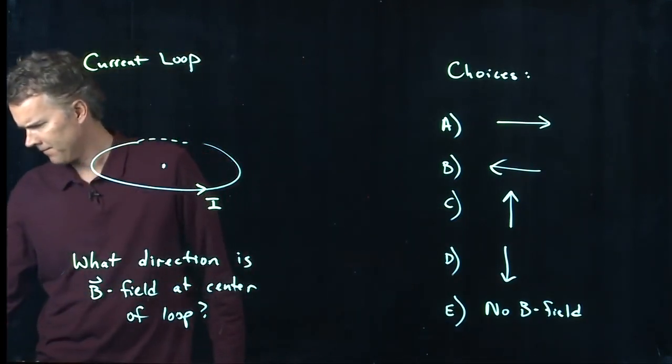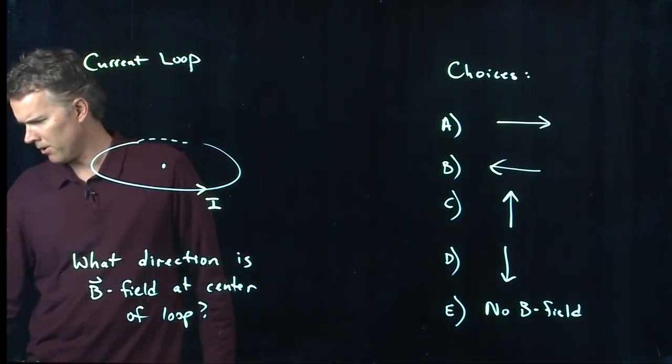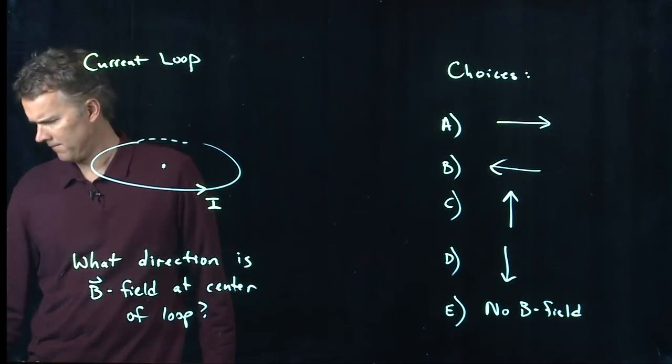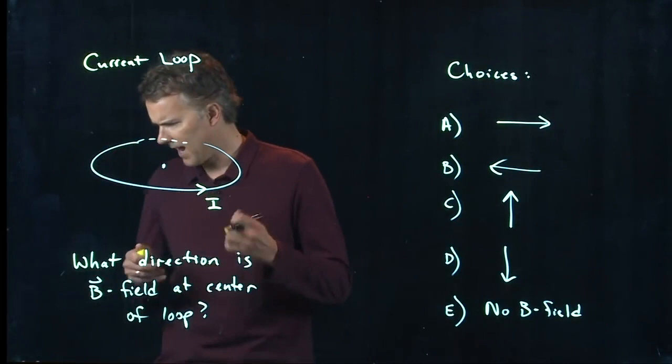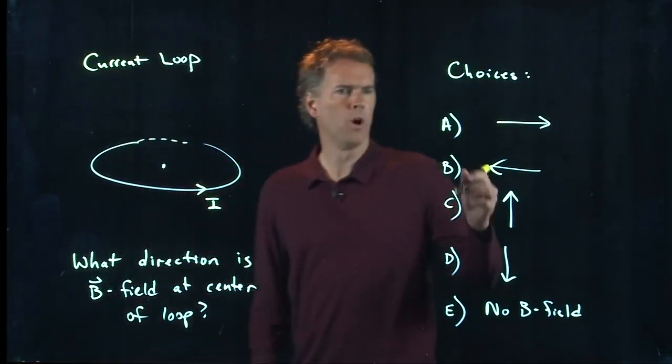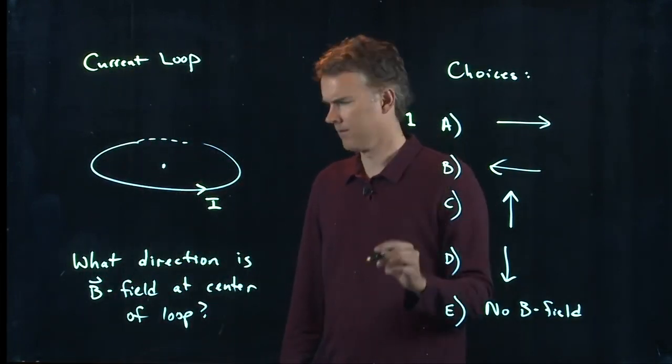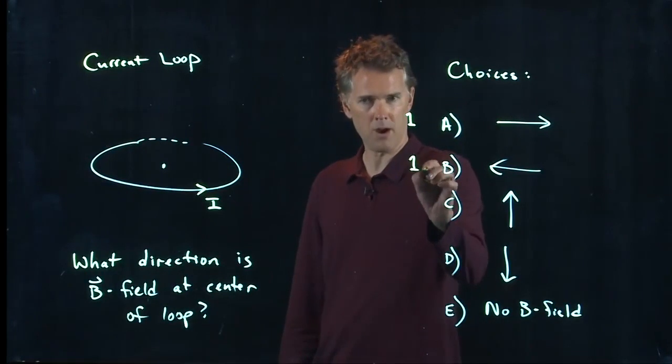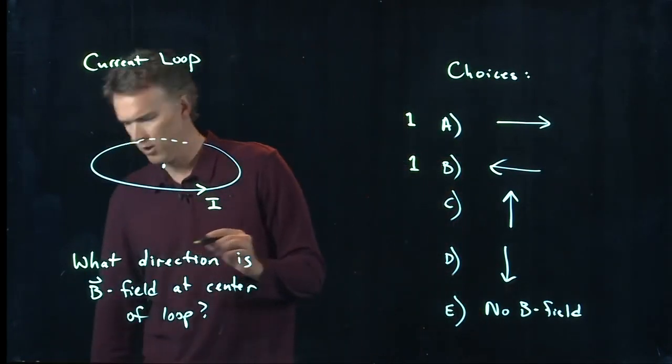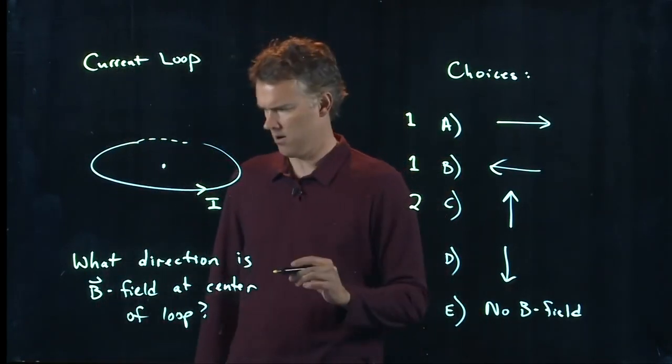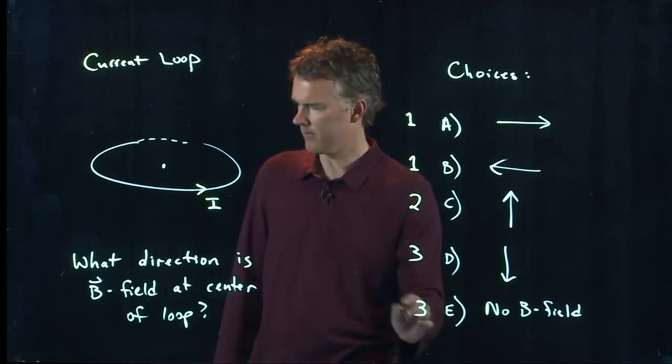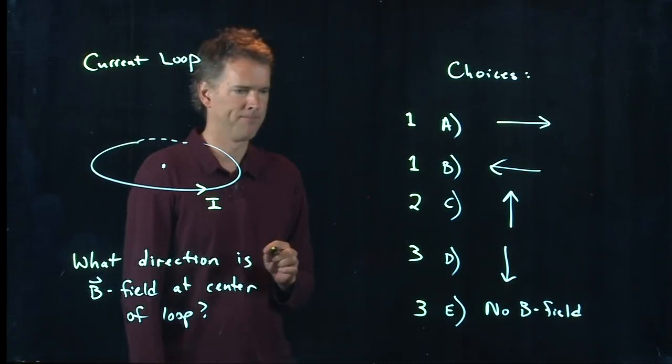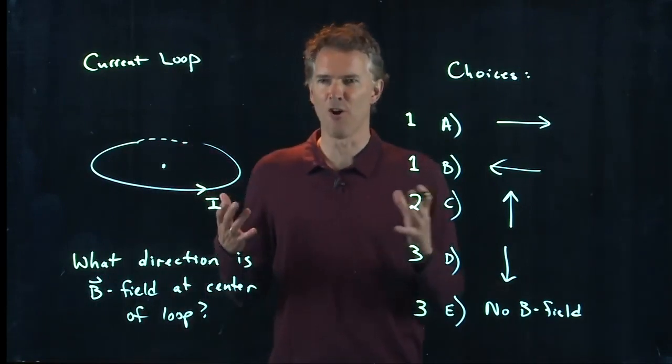Good. So there were 10 responses and let's see what the results look like. We've got one vote here, one vote there, two votes there, three votes there and three votes there. So kind of all over the place, right?